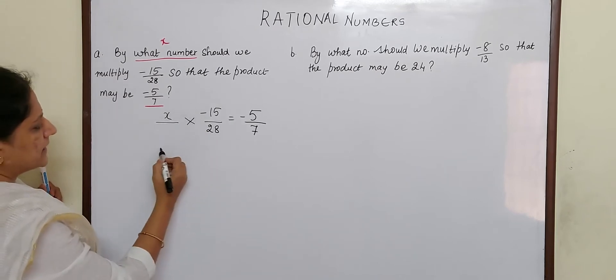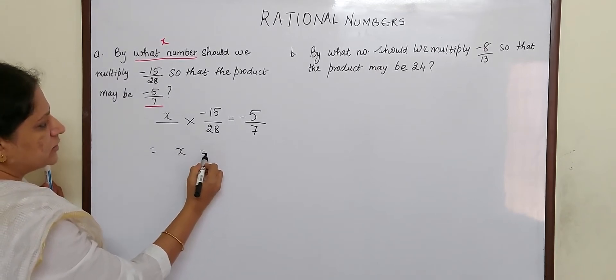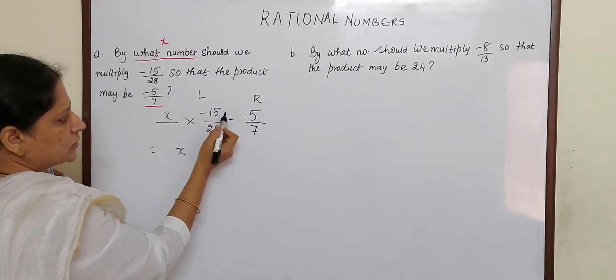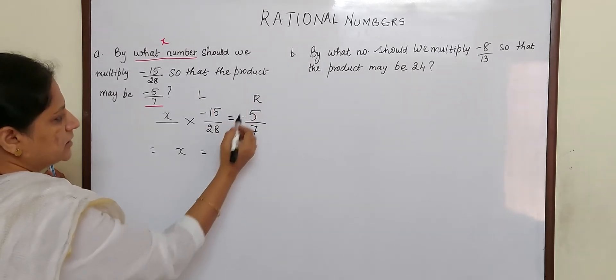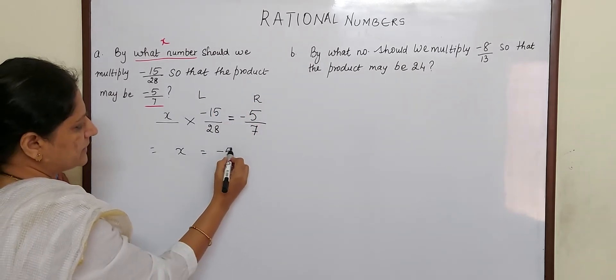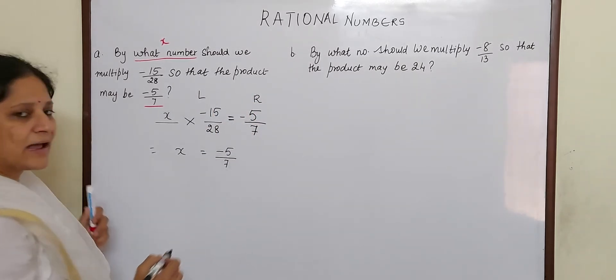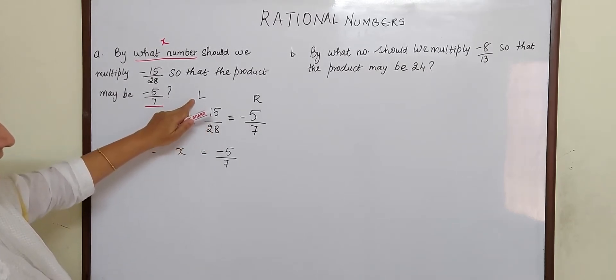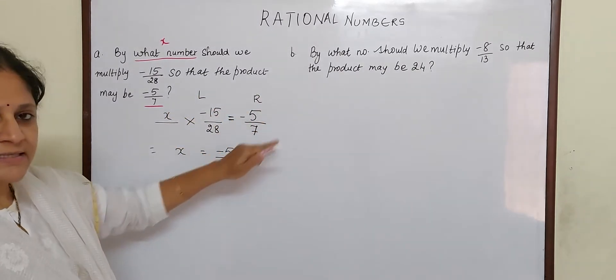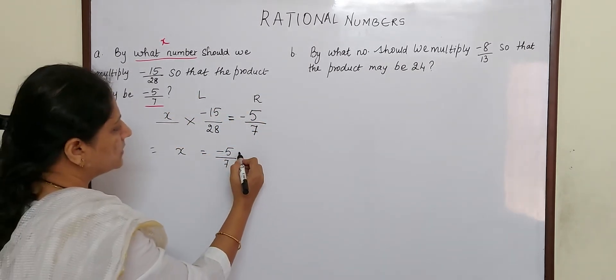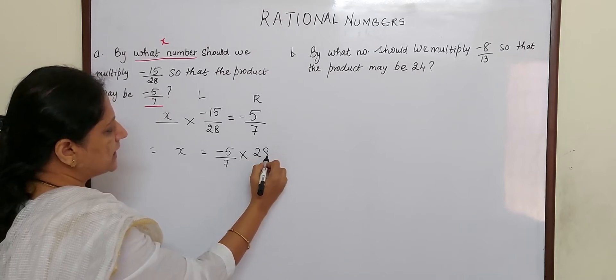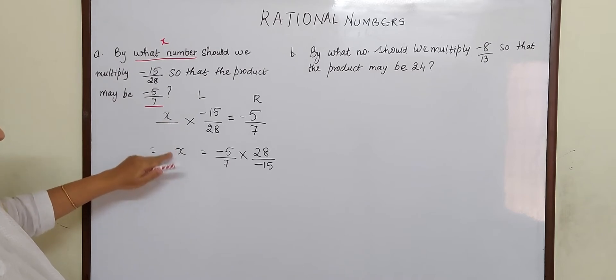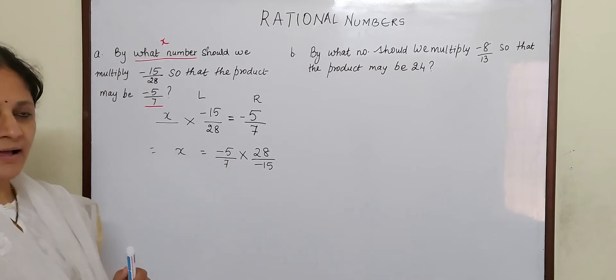So now let us go to the next step. x is equal to - now this is left hand side and this is right hand side. Before equal to is left and after equal to is right side. So in the right hand side, I will keep -5/7 as it is, and the number -15/28, when it leaves left hand side and goes to right hand side, it becomes a reciprocal. So into 28 by -15. And why are we doing that? So that x is left in the left hand side and we will get the answer.